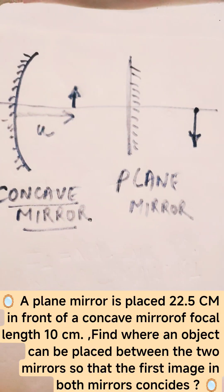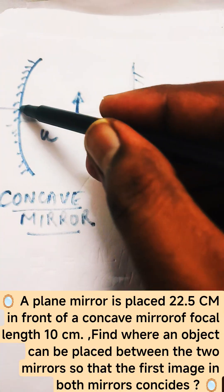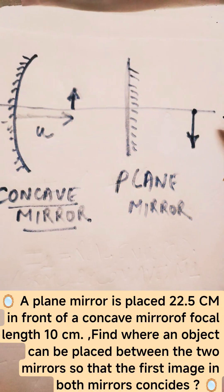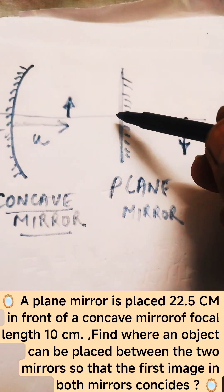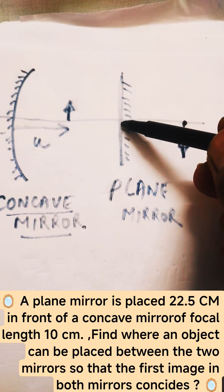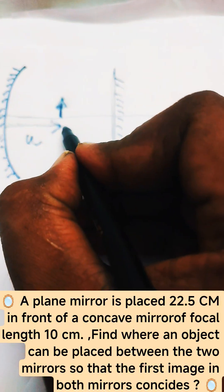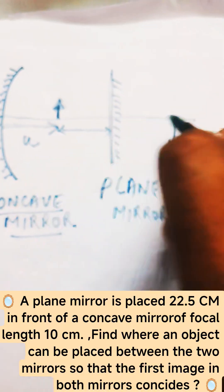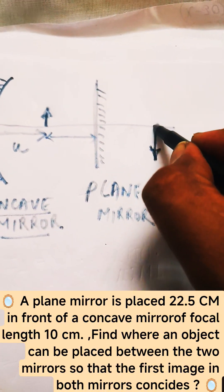This u needs to be calculated so that the first image formed by this concave mirror and the image formed by this plane mirror would lie at the same place.